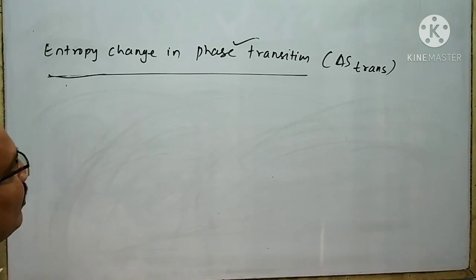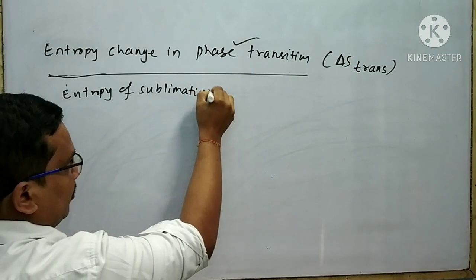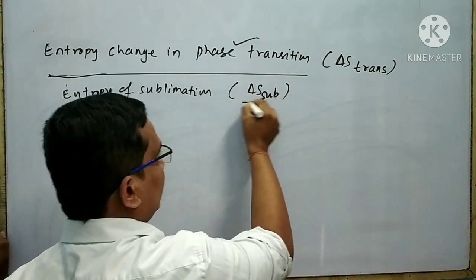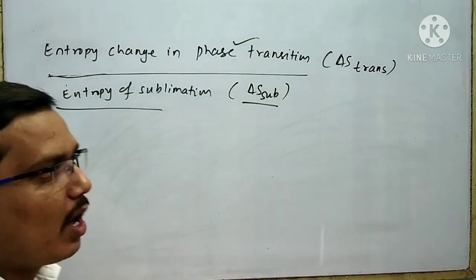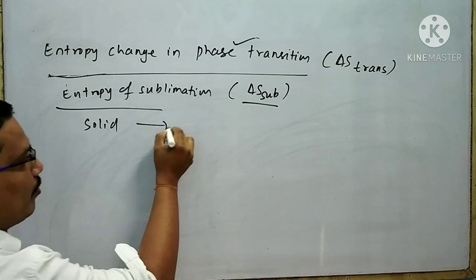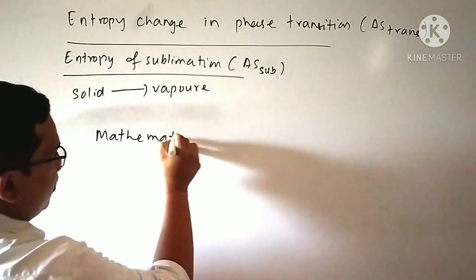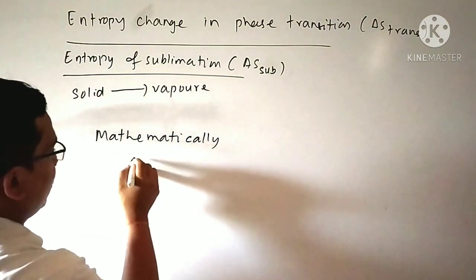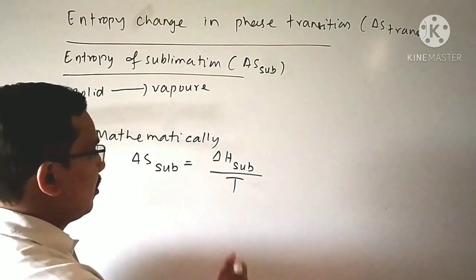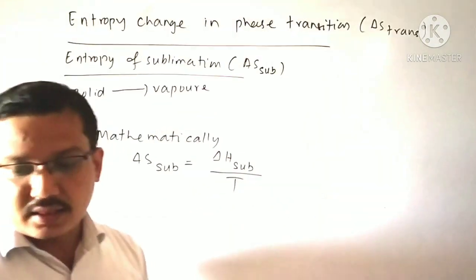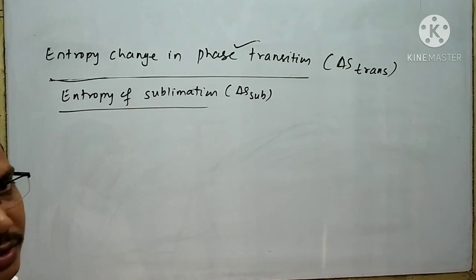Next, I want to explain entropy of sublimation, denoted by ΔS_sub. It is the entropy change when one mole of solid changes to vapor at a particular temperature. Mathematically, ΔS_sub = ΔH_sub / T, where ΔH_sub is the enthalpy of sublimation at that temperature.